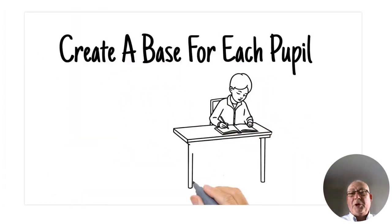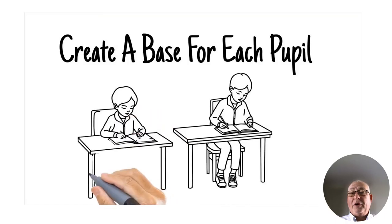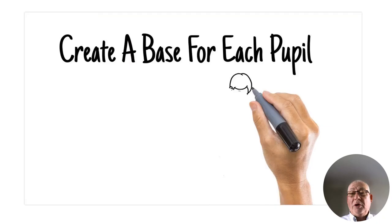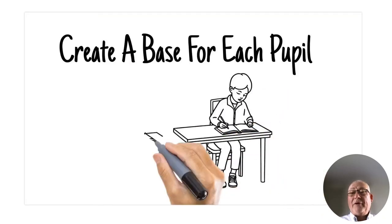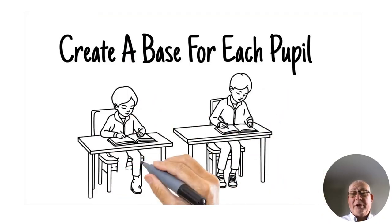Create a base for each pupil. Ensure that they have their own recognized base. We like our own personalized space as humans. We habituate. We identify each pupil's space with their name labels.